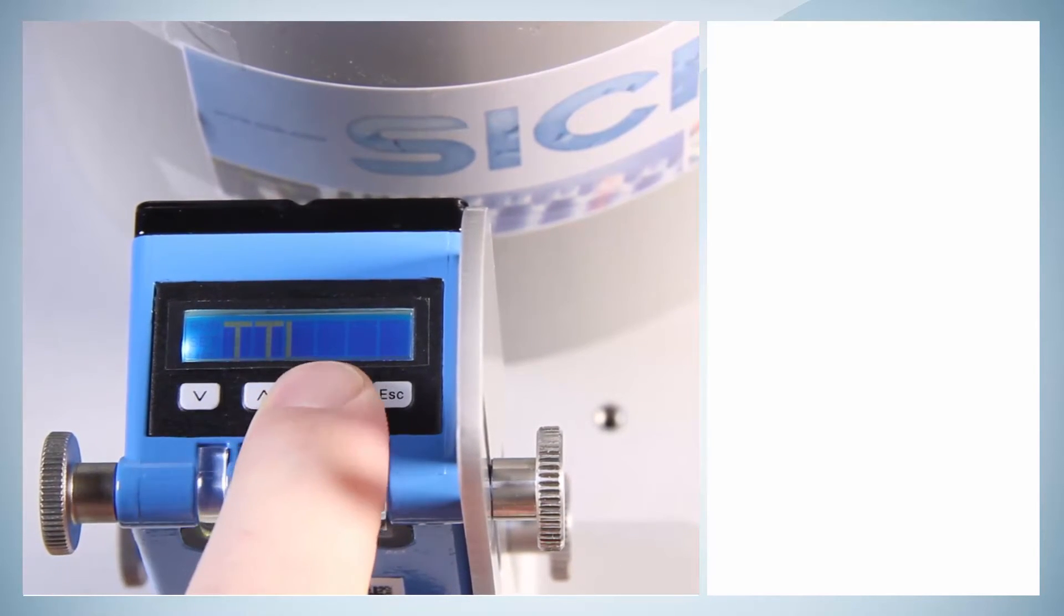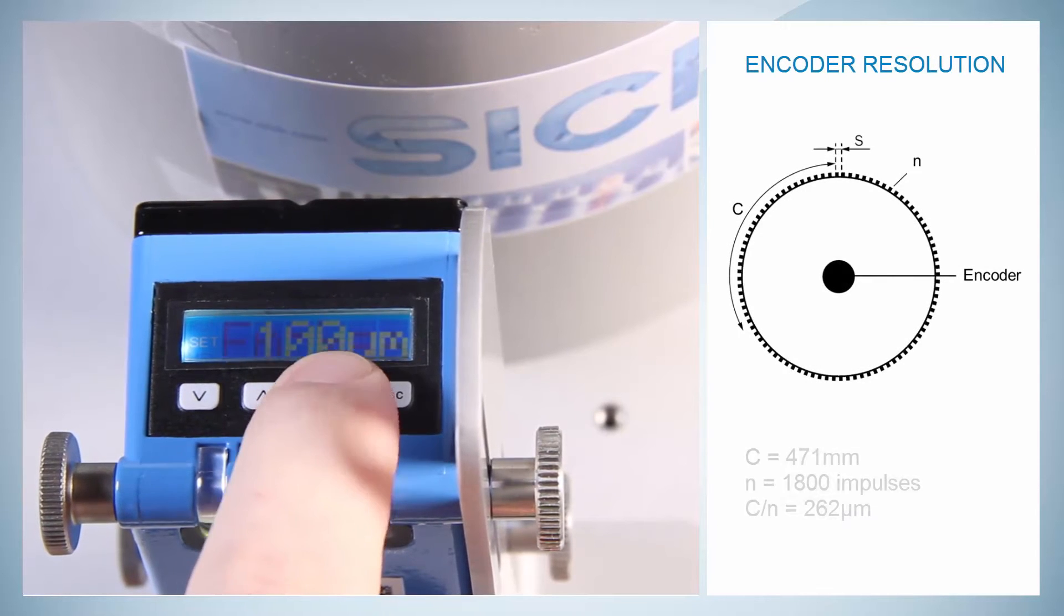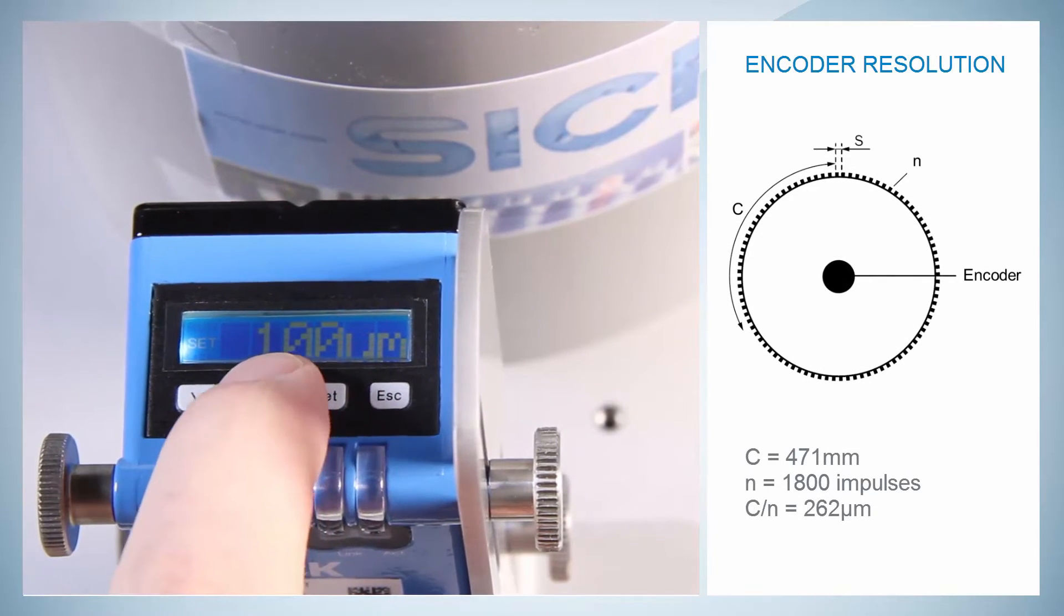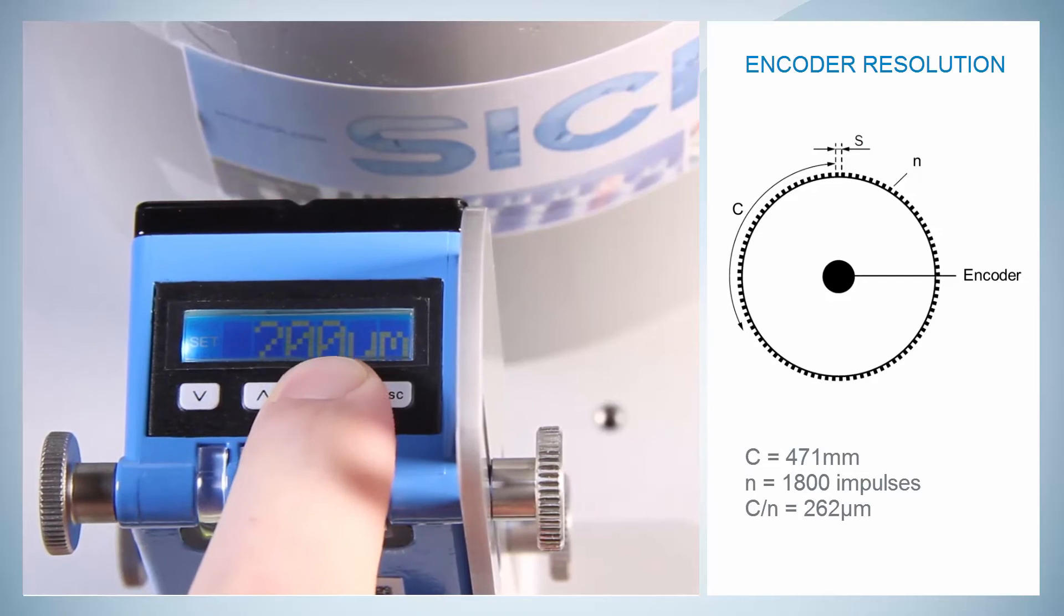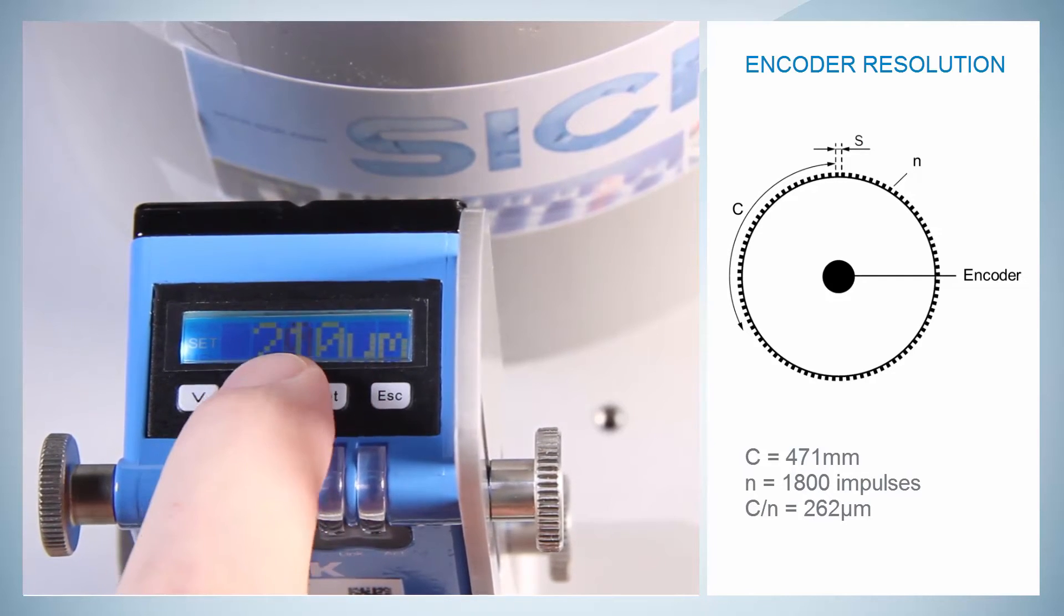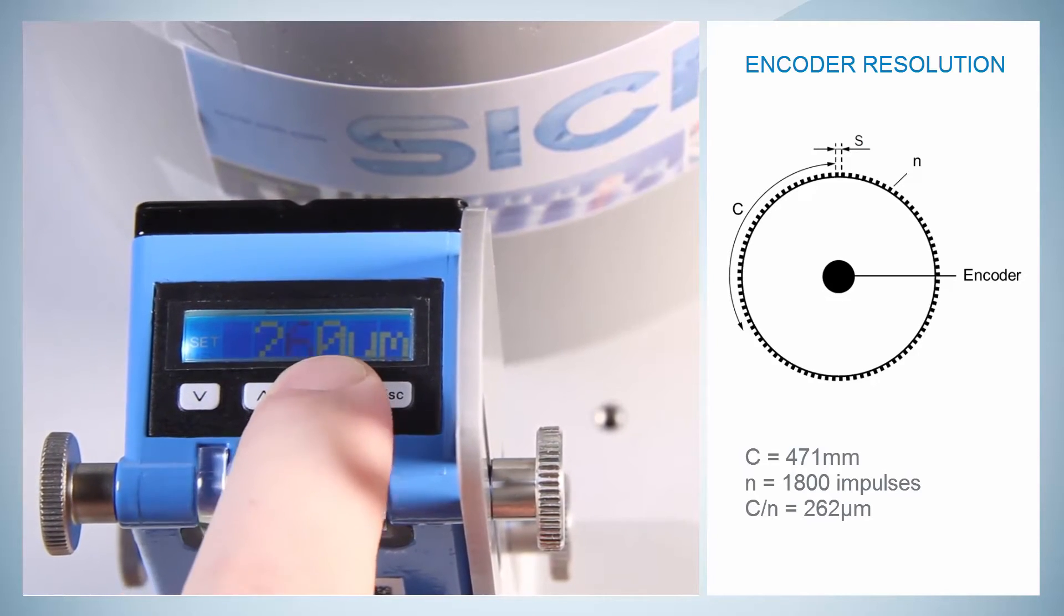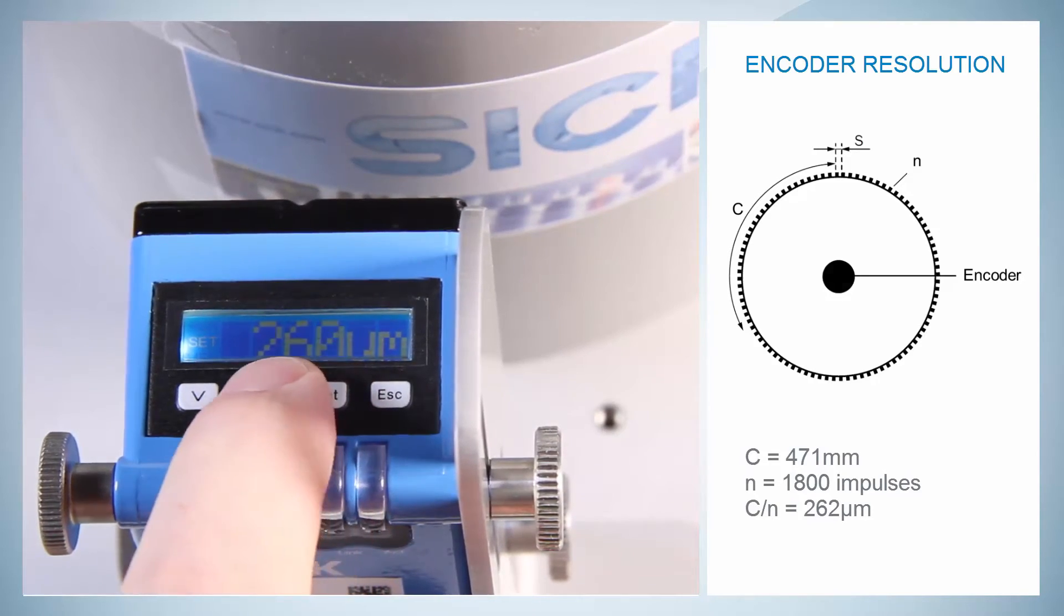The encoder resolution can be calculated as follows. The circumference of the drum is 471 mm which shall be divided by the number of encoder impulses per rotation. In this case, it is 1800 impulses. The resulting resolution then is 262 microns.